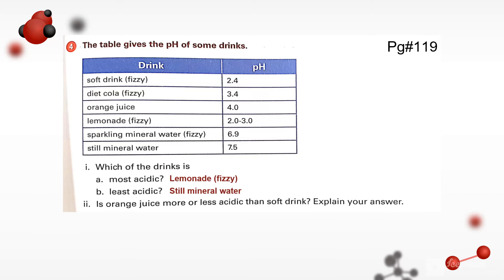Is orange juice more or less acidic than soft drinks? Explain your answer. So the answer is: orange juice is less acidic because it has a higher pH value than the soft drinks.